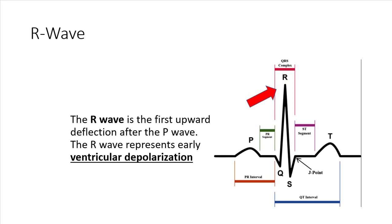The R wave is the first upward deflection after the P wave, and it again represents ventricular depolarization — the ventricles are actually firing.